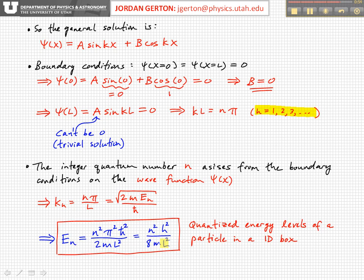And we can rewrite this, if we like, in this form, by just substituting h for ℏ, h over 2π, and you get it in this form here. So again, these are the quantized energy levels of a particle in a one-dimensional infinite square well, or one D box.